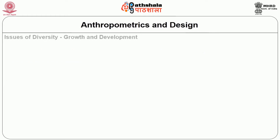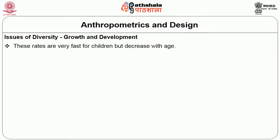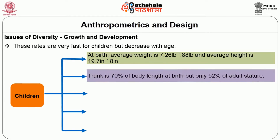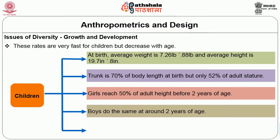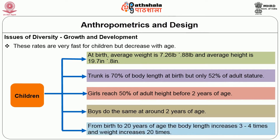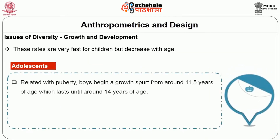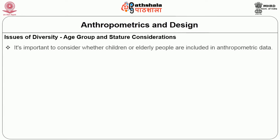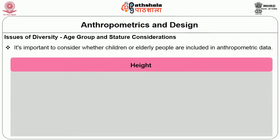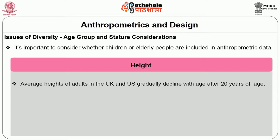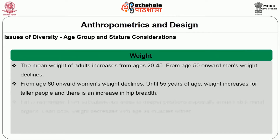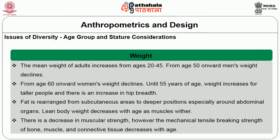Growth and development also affect design. At birth, a child's average weight and height are different from those of an adult — these grow and change as the child develops. The relevant populations are children, adolescents, and grown-up adults. The age group and stature consideration involves how physical and body movements keep changing as people grow older. The key question is whether you are designing for adults or for children — keep in mind how anthropometric data applies to height, weight, and overall body position.